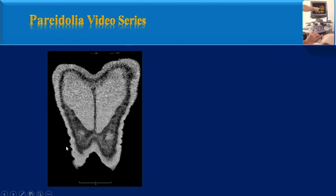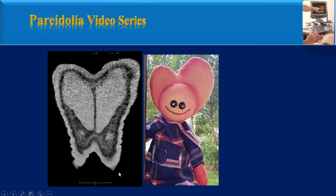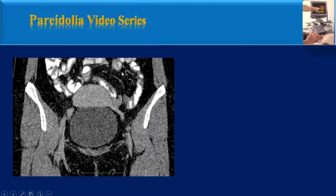This coronal CT image from the chest wall — pay attention to this part of the image. It looks like a hoof.